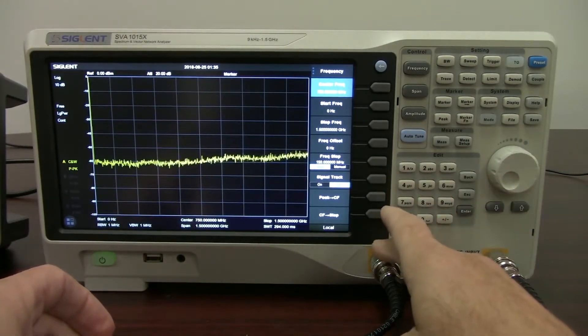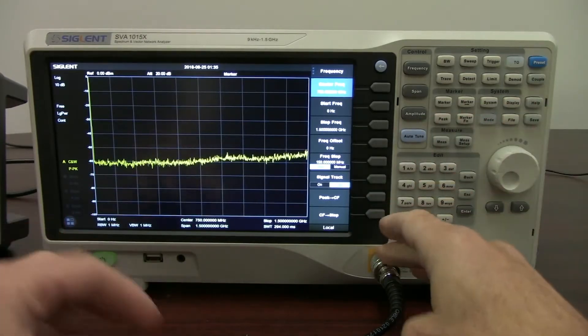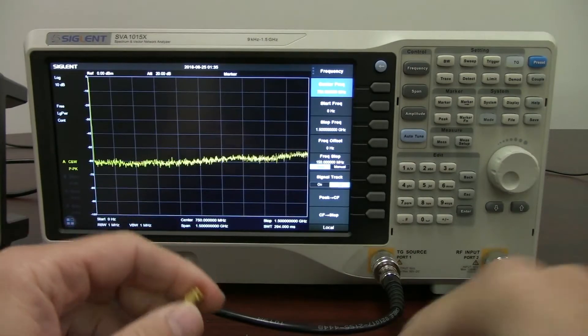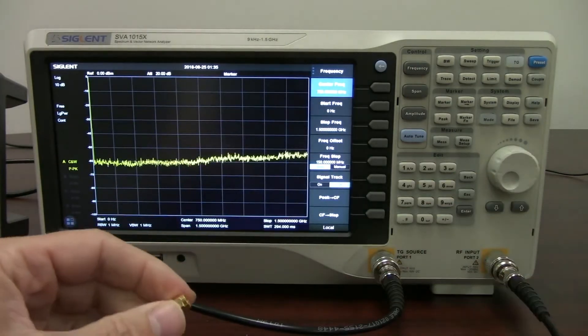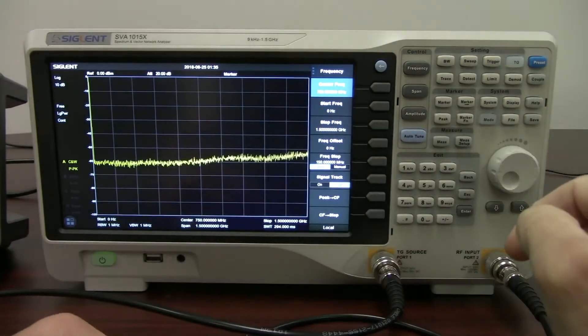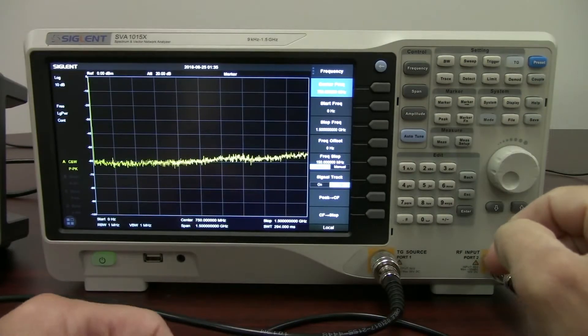So the tracking generator signal is going to be output through this port, through this cable, and then it's going to go through our attenuator. We're going to then measure it with this port, the RF port, and we're going to look at the output on the front panel of the display here.